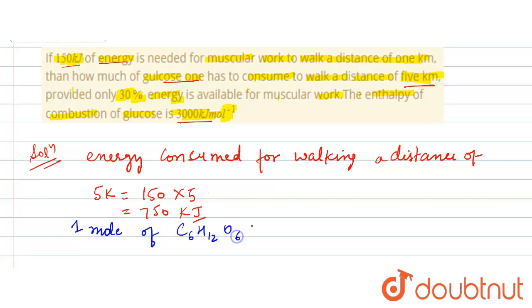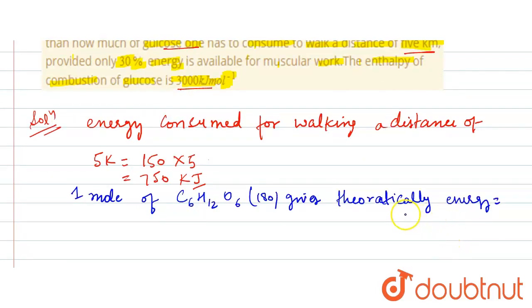One mole of glucose, which is C6H12O6, whose molar mass is 180 gram, gives theoretically energy equal to 3000 kilojoule.